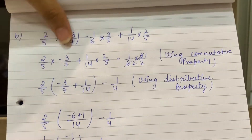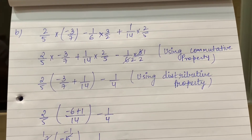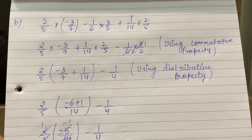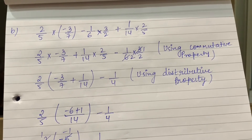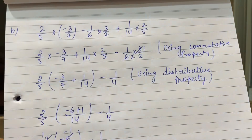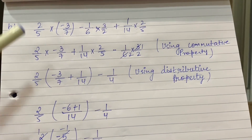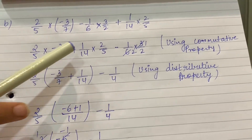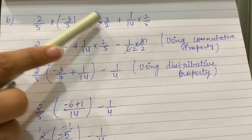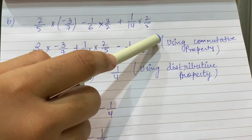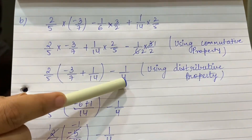Second sum: 2 upon 5 into minus 3 upon 7, minus 1 upon 6 into 3 upon 2, plus 1 upon 14 into 2 upon 5. All three are multiplication terms. But in these three, in two of them one term will be common. Like in this one and this one, 2 upon 5 is common. So we will bring them side by side — this is commutative property. So: 2 upon 5 into minus 3 upon 7 plus 1 upon 14 into 2 upon 5. 2 upon 5 is now common in both. Minus 1 upon 6 into 3 upon 2 remains as it is. Cutting here: 3 ones are 3, 2 twos are, so it becomes minus 1 upon 4.